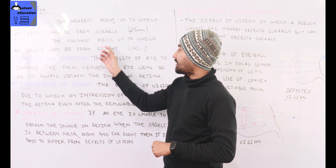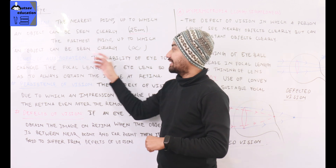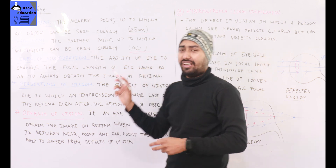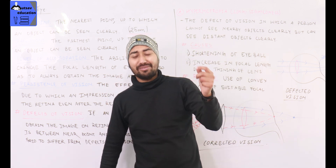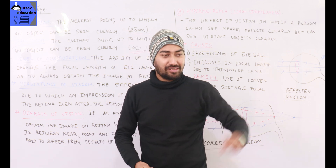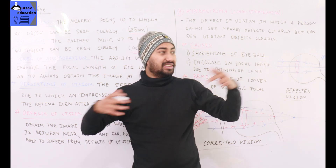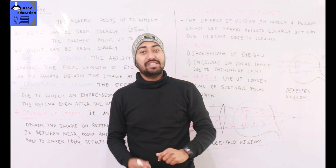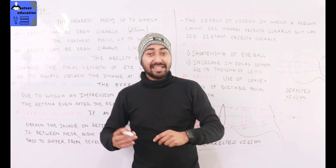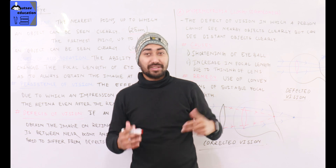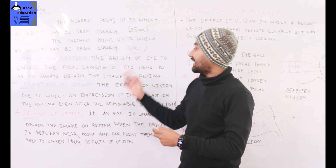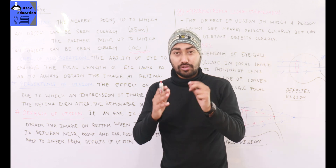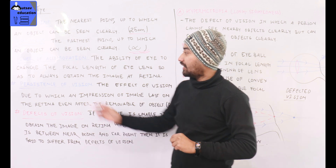The far point is the farthest point up to which an object can be seen clearly. The far point is at infinity. For example, if you look at the moon, you can see the stars — that's at infinity. So infinity is the far point of a normal eye.